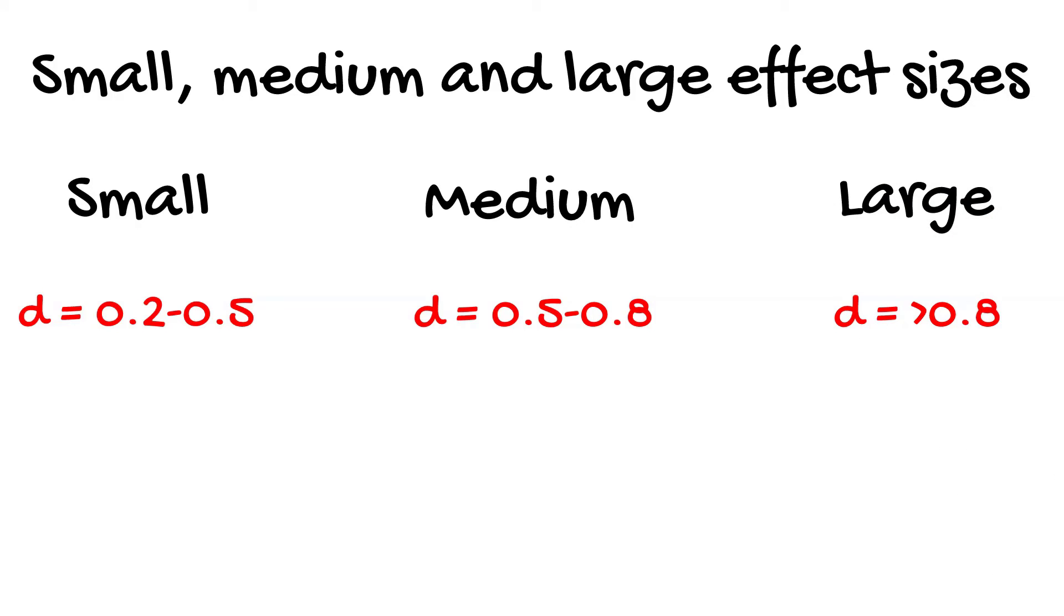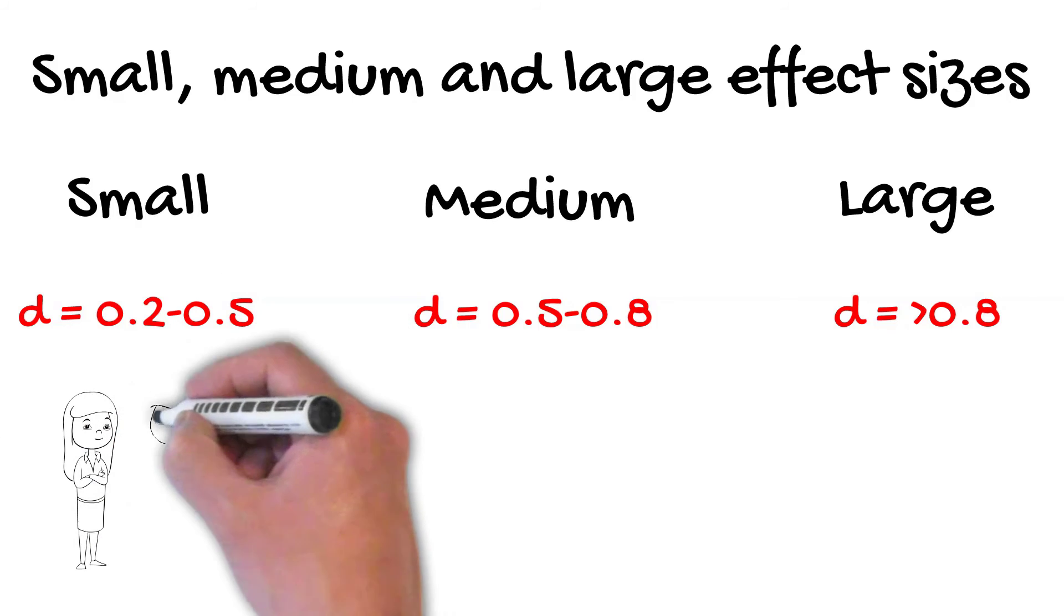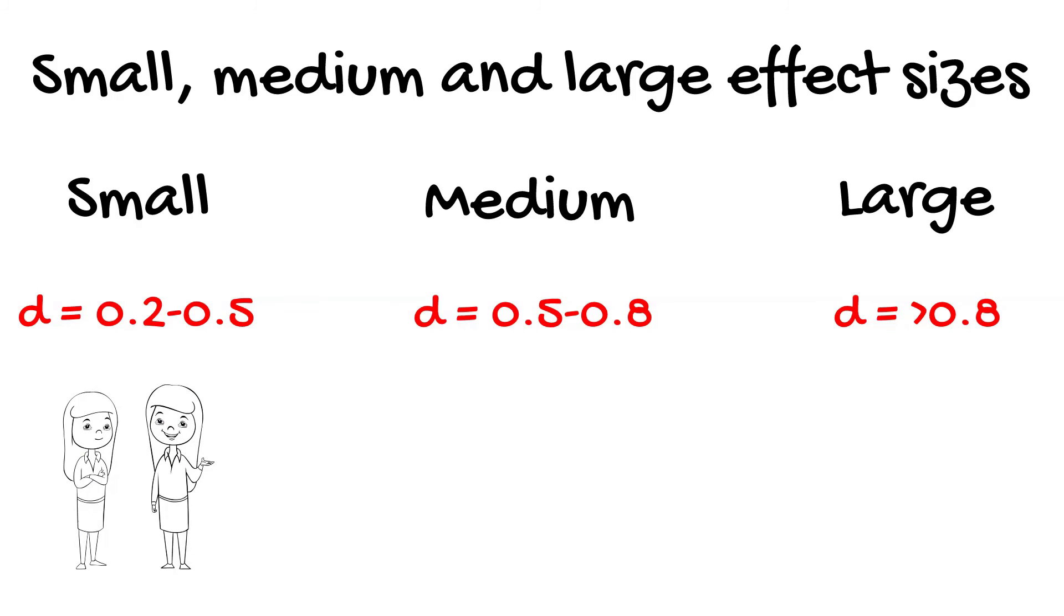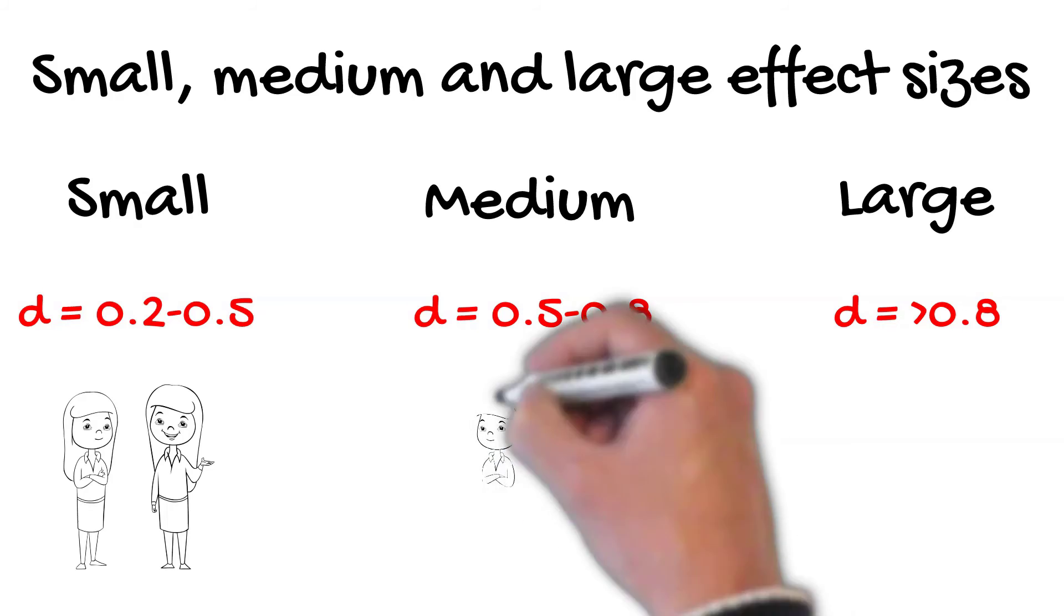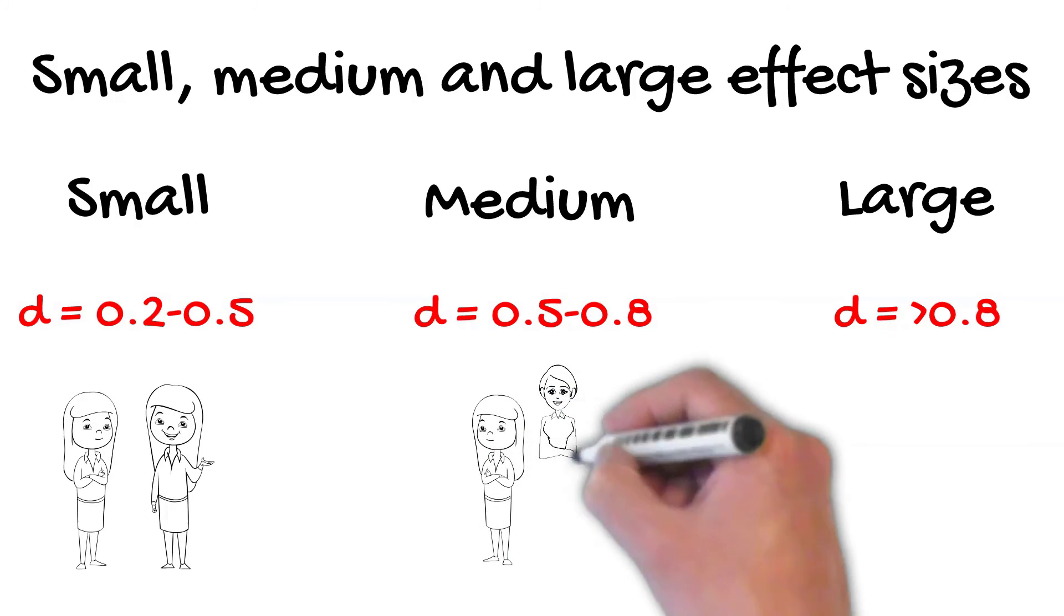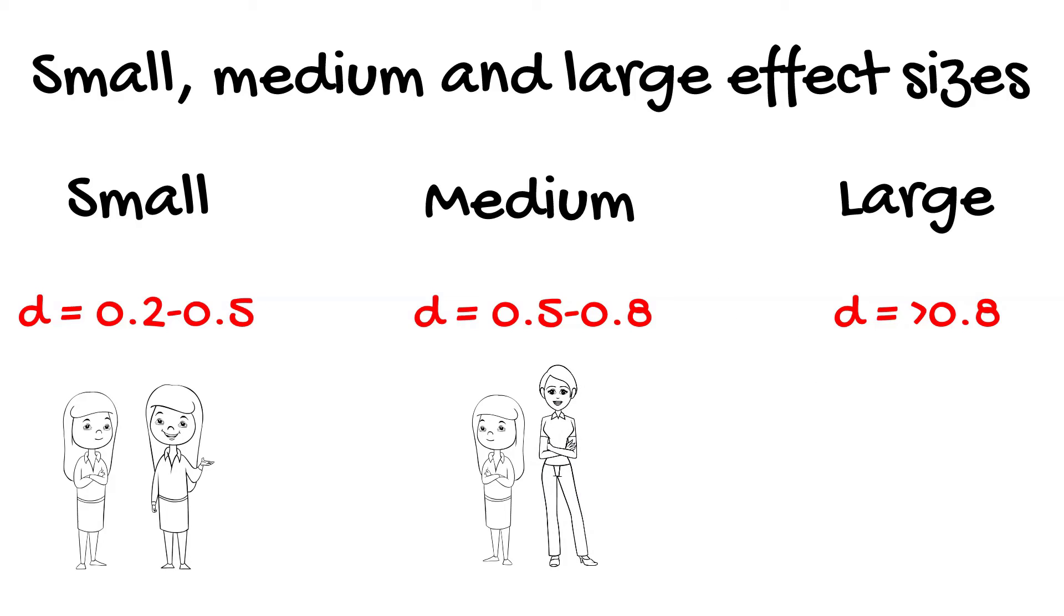To put into perspective, Cohen stated that small effect sizes are generally considered too small to be differentiated by the naked eye. An example of a small effect size is the difference in height between 15 and 16 year old girls. Medium effect sizes are just large enough to be seen by the naked eye. Elaborating on this, Cohen explained that the difference in height between 14 and 18 year old girls would be calculated as a medium effect size. Large effect sizes are really obvious differences between groups. Keeping in alignment with Cohen's examples, he described this size to be observed when comparing 13 and 18 year old girl heights.